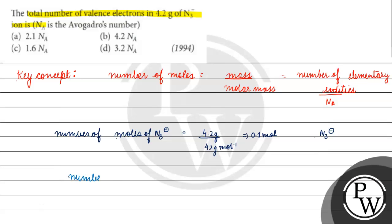The number of molecules of N₃⁻ equals number of moles times Avogadro's number. The molar mass of N₃⁻ is 42 g/mol, so number of moles = 4.2 / 42 = 0.1. Therefore, number of molecules = 0.1 × Avogadro's number.